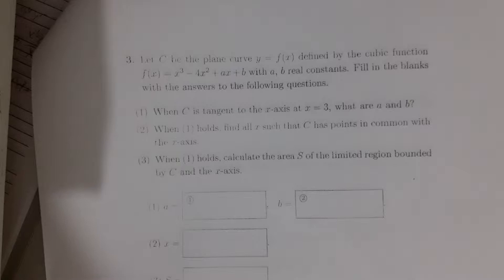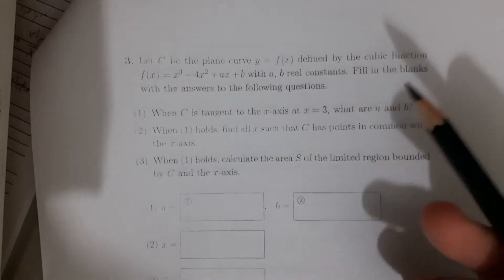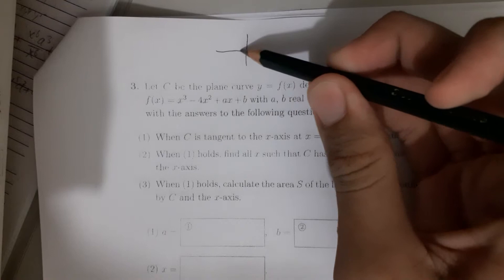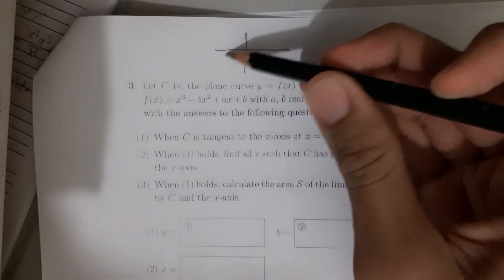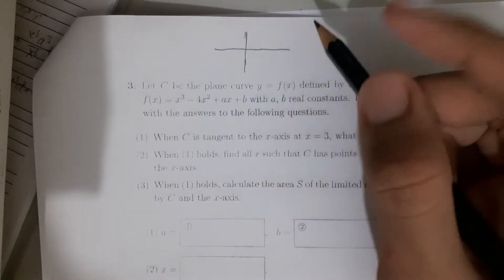Let C be the plane curve y equals f(x), defined by the cubic function f(x) equals x³ minus 4x² plus ax plus b with a and b real constants. Problem 1: when C is tangent to the x-axis at x equals 3, what are a and b? So there's a curve here. The curve is defined as a cubic function.